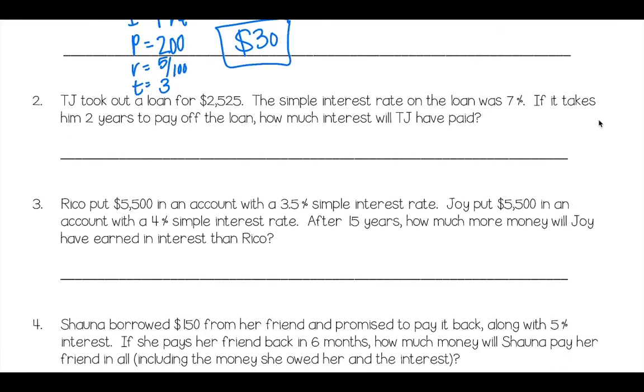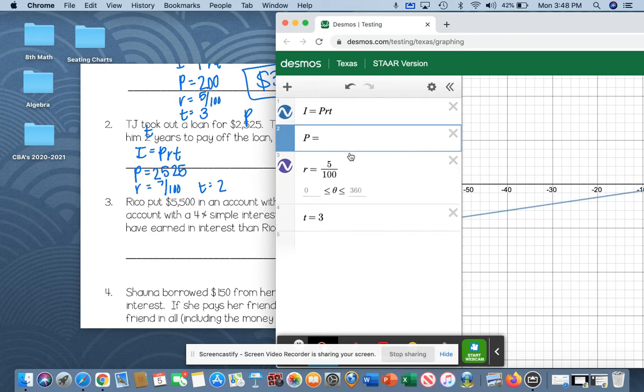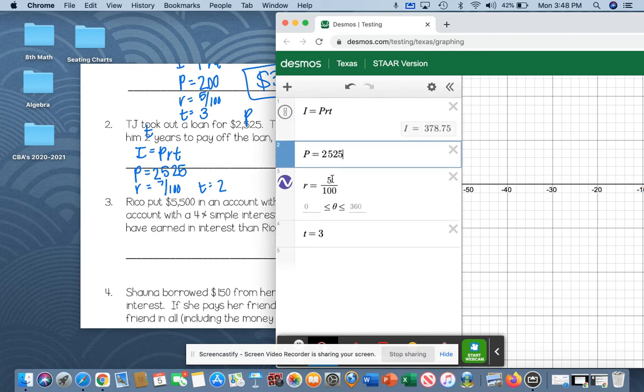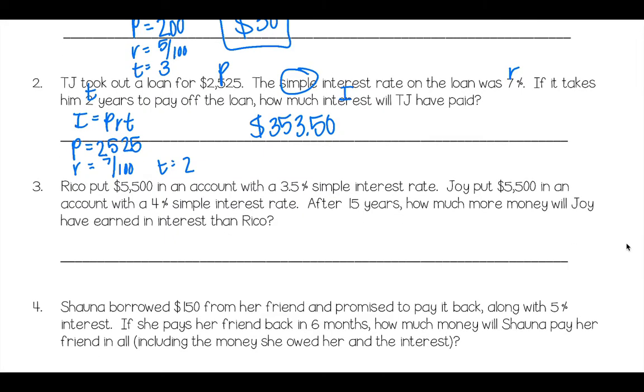Number next. TJ took out a loan for $2,525. Principal. That's what we're starting with. The simple interest rate on a loan was 7%. R. If it takes him two years. T. To pay off loan. How much interest will TJ have paid? So I equals PRT. We have P, which is 2525. We have a rate, which is 7 over 100. And then we have a T, which is 2. There's not enough space to write all this stuff out. Come on Miss Miller. 2525, 7, and then 2. $353.50. Man. We're doing so good. We're on a roll.